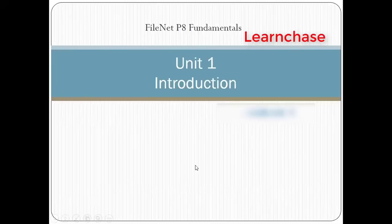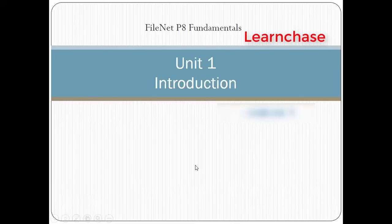The first unit we are going to cover is the introduction, where we will cover what is ECM, what is FileNet, what are the different products in FileNet. There are two UI products from FileNet: one is called Workplace XT, and the newer one is called IBM Content Navigator, or ICN. We will deal with both Workplace XT and IBM Content Navigator.